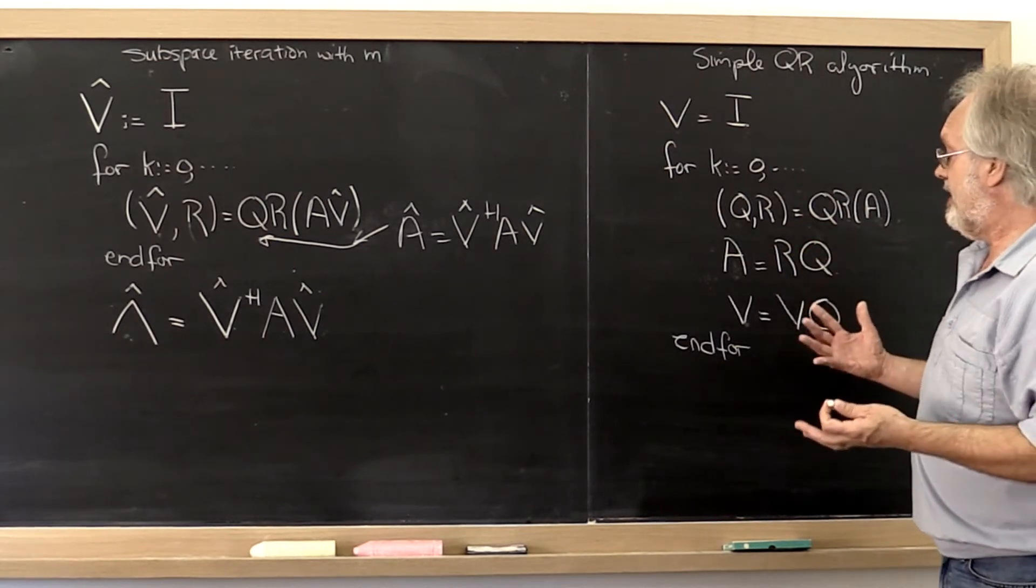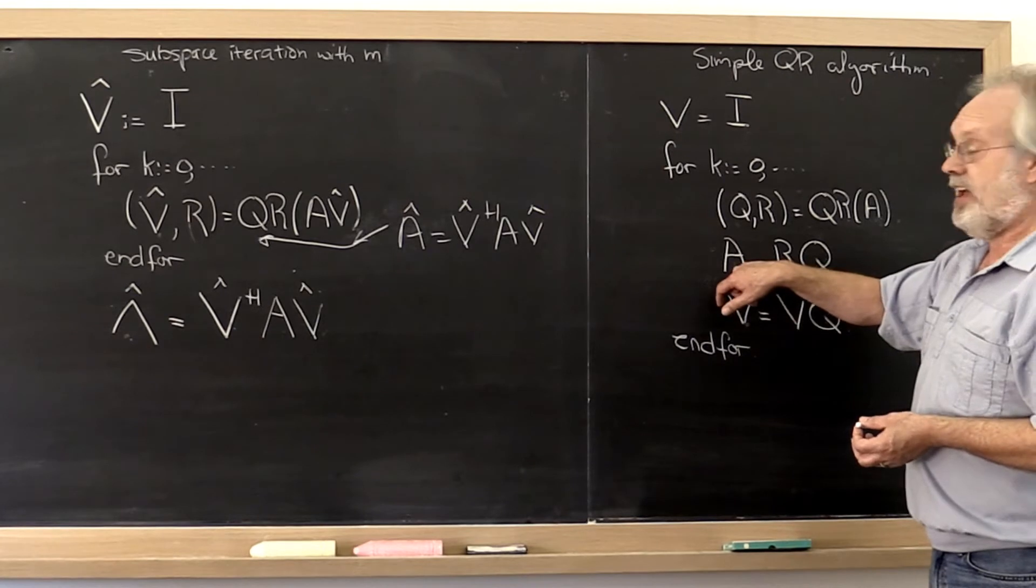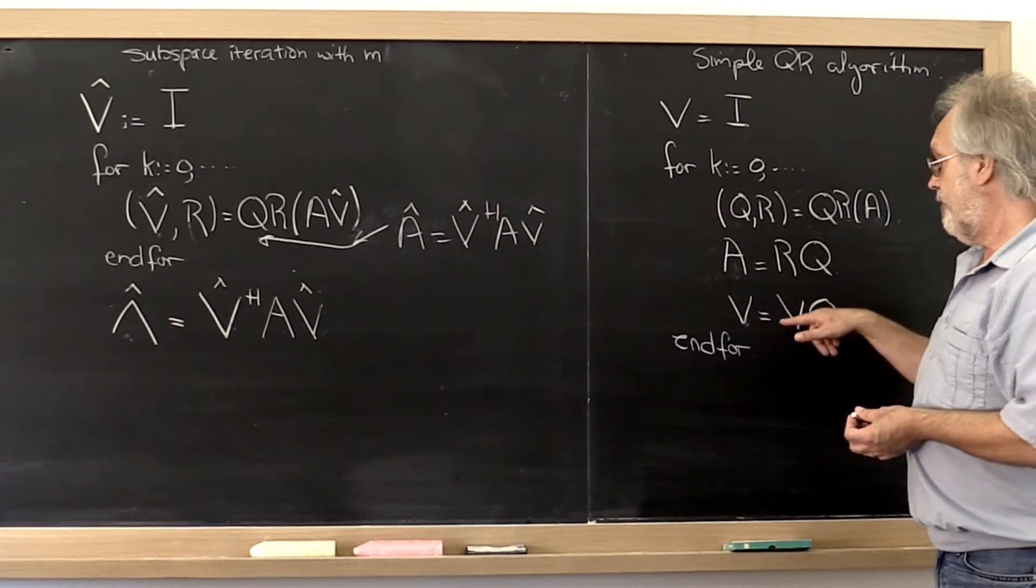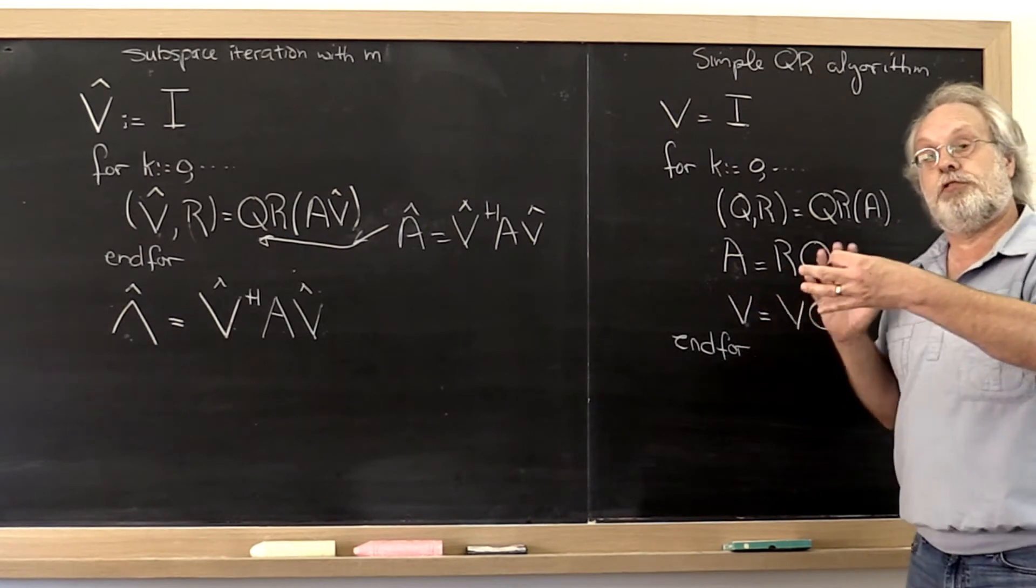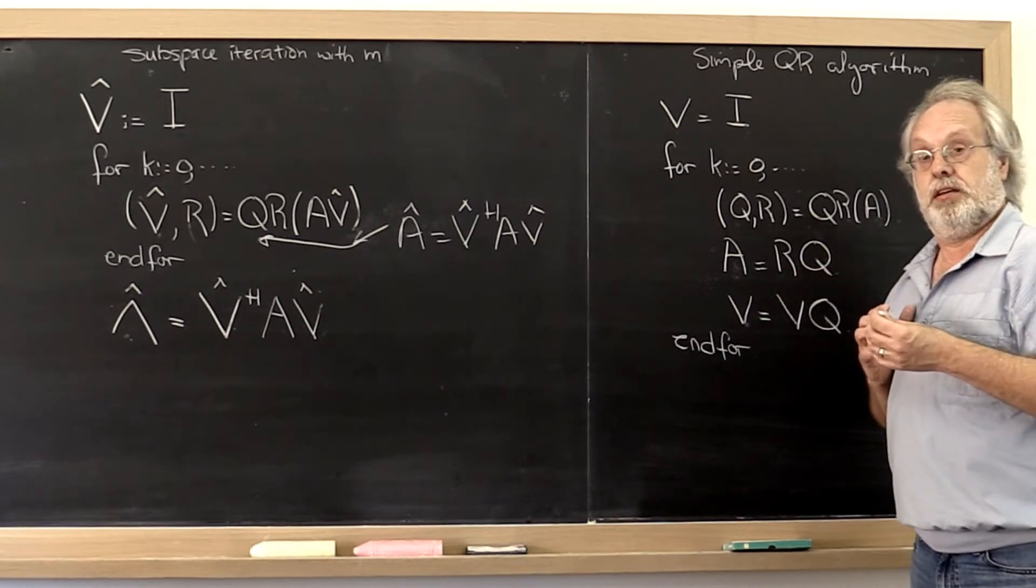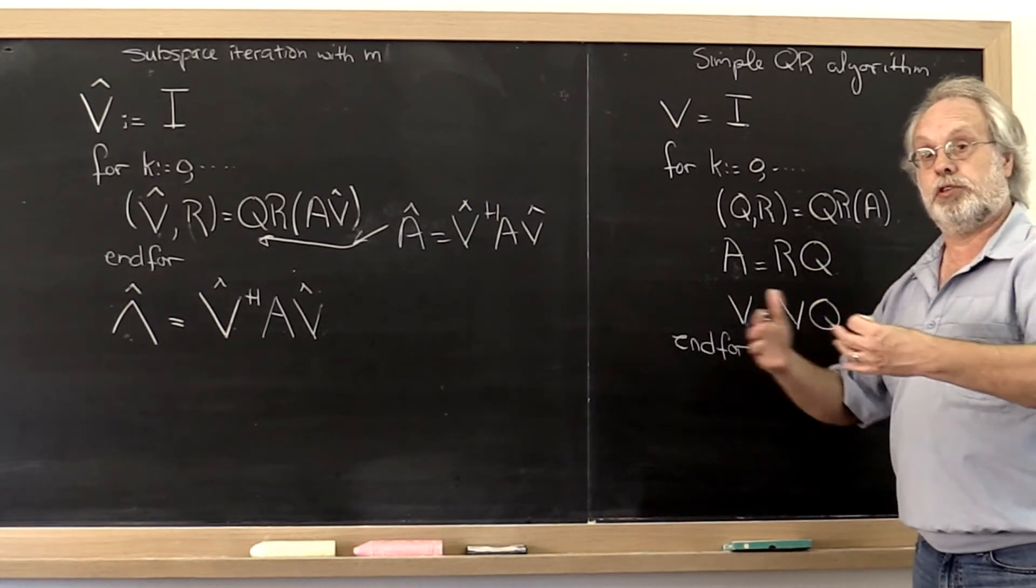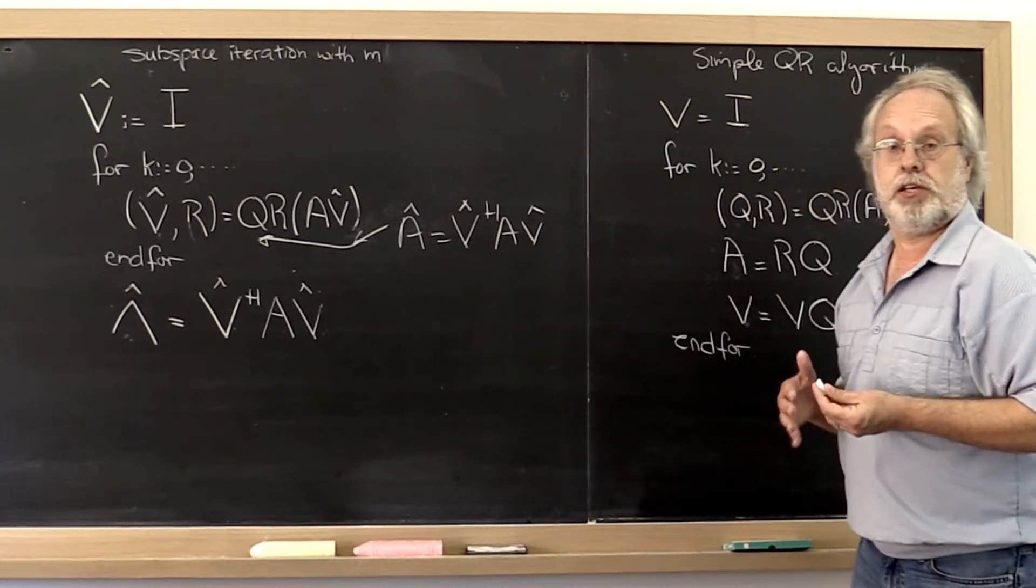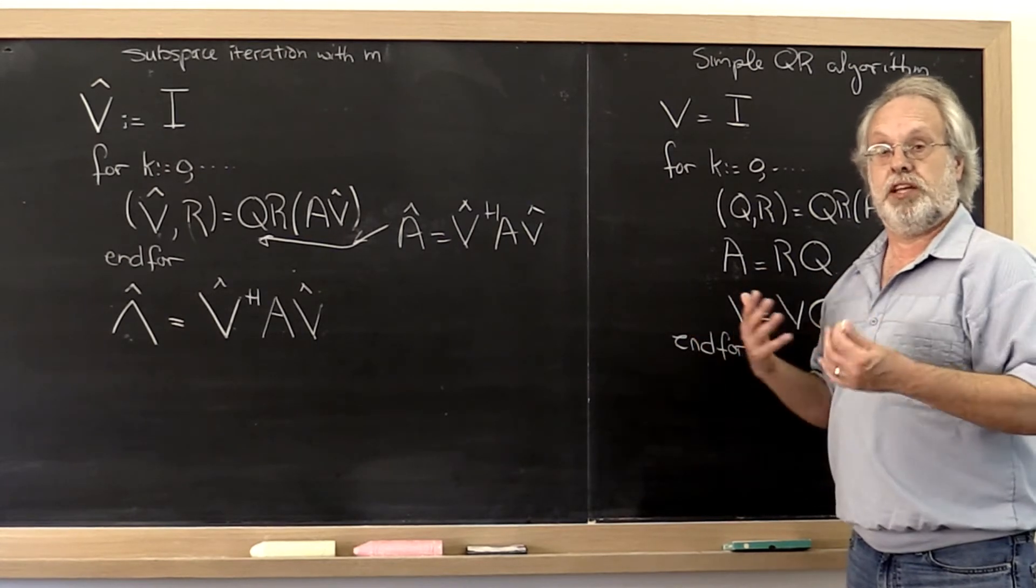And what you notice then is that this matrix A eventually becomes the diagonal matrix. And if you accumulate all of these transformations of the basis that you encountered along the way, what you end up with is a matrix where the columns of that matrix equal the